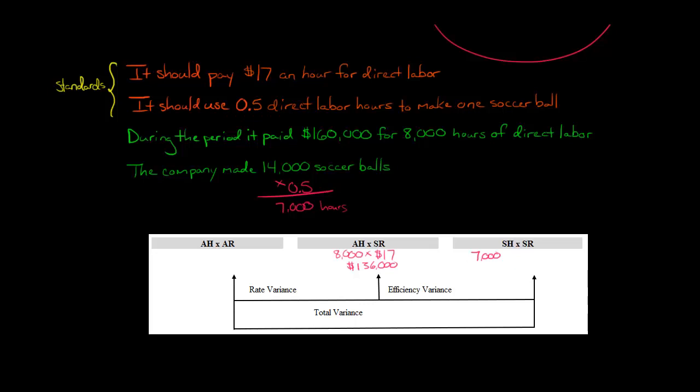7,000 hours times the standard rate. Well, that's the same as before, $17. And if you multiply these out, you get $119,000. Now we have $136,000 here and $119,000 here. So now we take the difference between those and it's $17,000. So that is our labor efficiency variance.